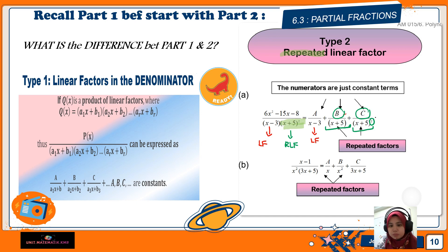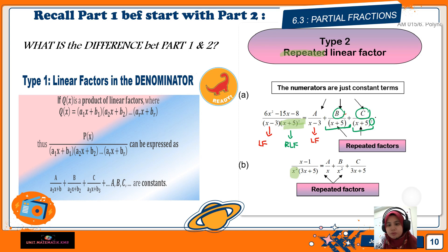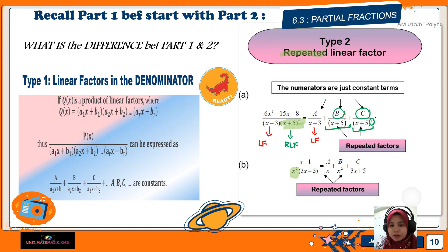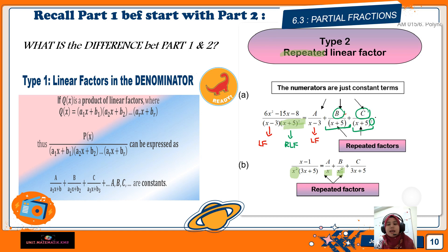Next, let's look at example b: (x − 1) over x²(3x + 5). The repeated factor here is x², because the equation starts with x². So you rewrite the partial fractions as A over x plus B over x², and last, continue with the linear factor 3x + 5 with its constant on the numerator.